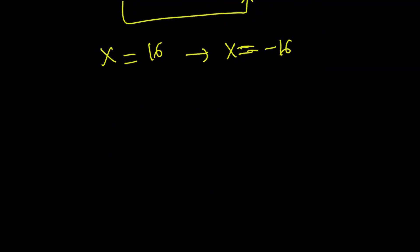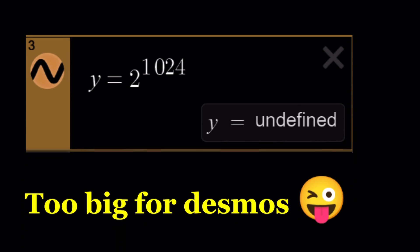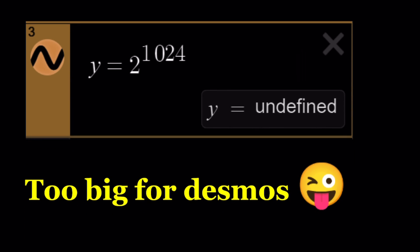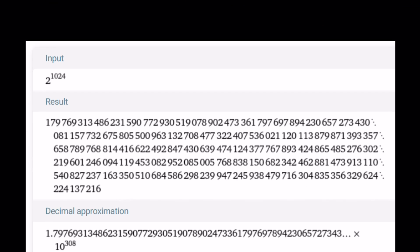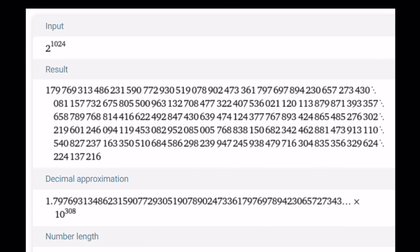So here's another question. Is 2 to the power 1024, is that a big large number? Let's find out. So according to Desmos, it is undefined. Well, this number is probably too big for Desmos maybe, I don't know. But it just calls it undefined. But let's go ahead and take a look at Wolfram Alpha, and that gives you actually the exact value.